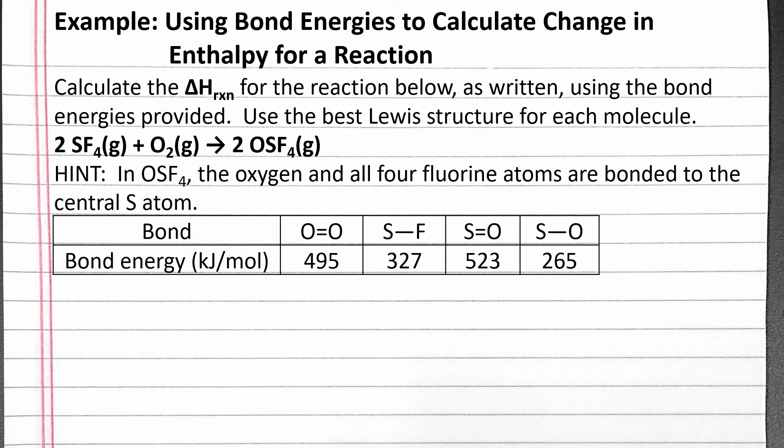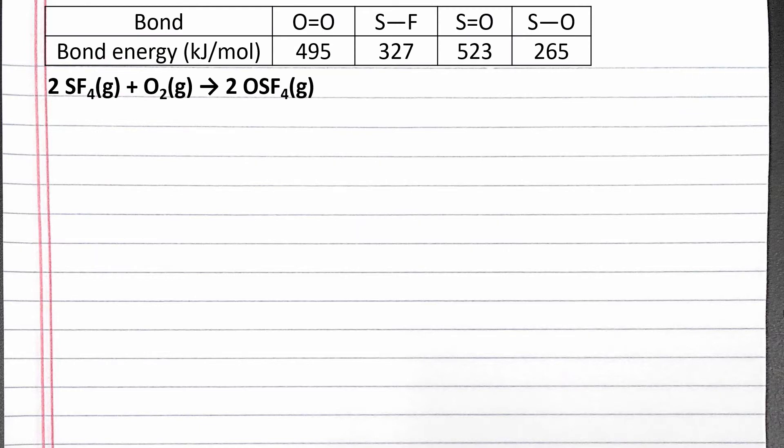In OSF4, the oxygen and all four fluorine atoms are bonded to the central sulfur atom. We can approximate the change in enthalpy for a reaction as the enthalpy change to break all the bonds of the reactants and the enthalpy change to form all the bonds of the products.